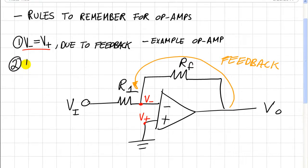The second rule is that the current going into the amplifier inputs is zero. So that would be this current from this node to the input. So that's I in.